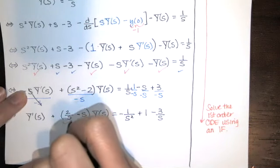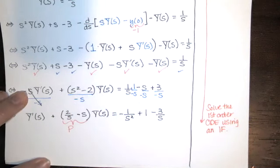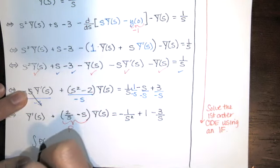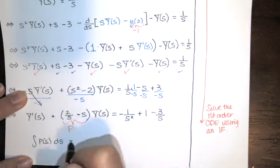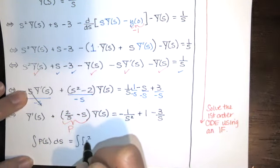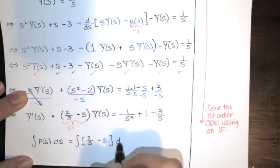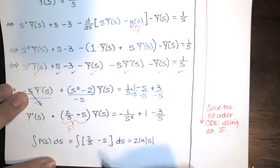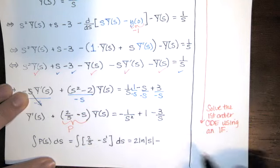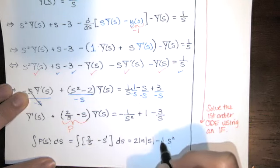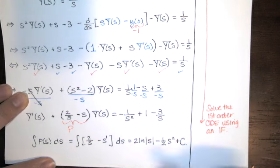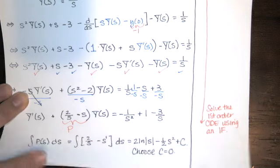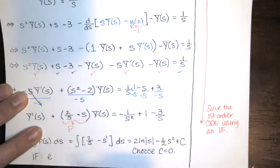To find the integrating factor, we identify P(S) and compute its anti-derivative; e to that power is our integrating factor. The integral of P(S) with respect to S is the integral of (2/S minus S). The first piece gives two times the natural log of |S|, and for the second we use the power rule, giving negative one half S squared, choosing the constant of integration to be zero.